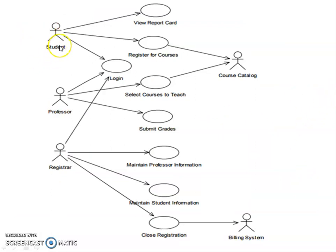Here is another example. Here five actors are here. Actors are the student, professor, registrar, and course catalog and billing system. This login use case, the student can enter into the system using login. Professor can enter into the system using login. Registrar can also use the system using login and password. And the student is having some other functionalities. That is, he can view report card or he or she can register for courses.